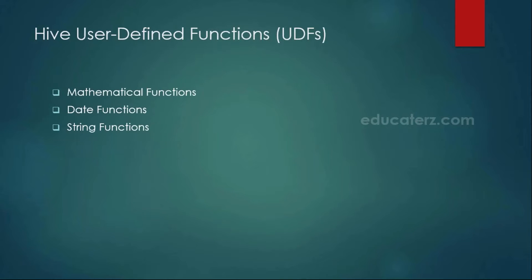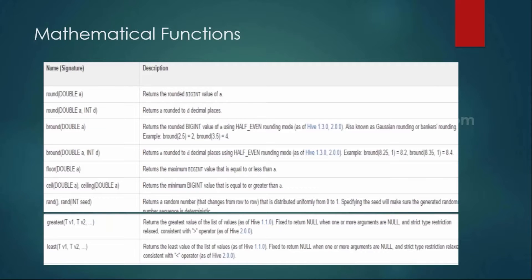Hive user-defined functions. You do have separate user-defined functions like mathematical functions and string functions. Under mathematical functions, if you wanted to manipulate values like round, ceil, floor, or if you want to find out the greatest, least, generate random numbers, find square roots, sign, cosine — such kinds of mathematical functions are built-in and already available in Hive.